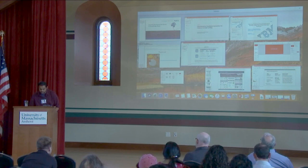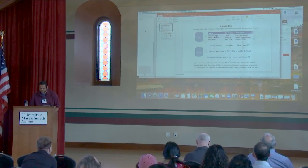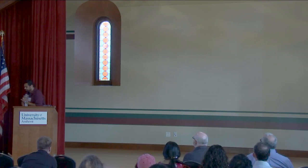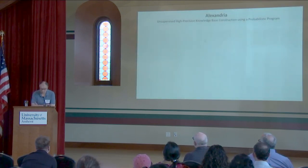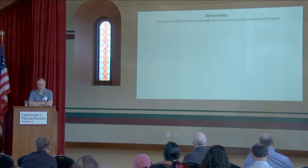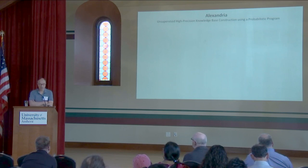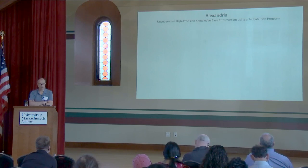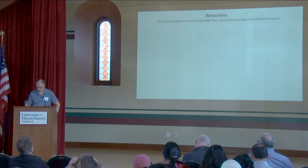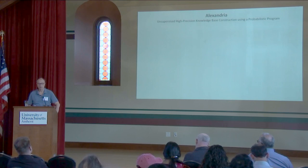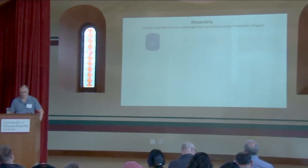Our next spotlight talk is from the best paper award winner. Hello, my name is John Giver. Alexandria uses a probabilistic program to create a generative model. We're going from knowledge to text. To understand this, let's suppose we have a knowledge base that contains all the knowledge — all the facts in the world.